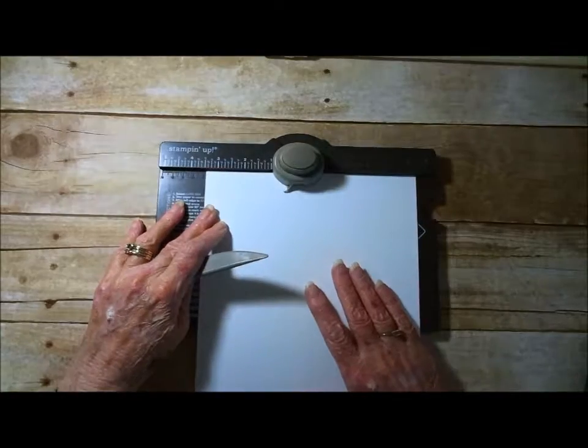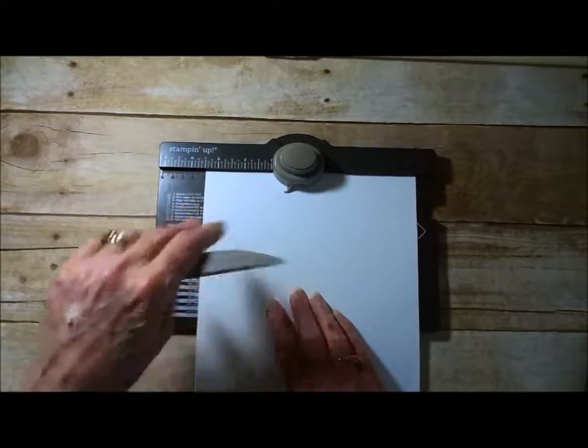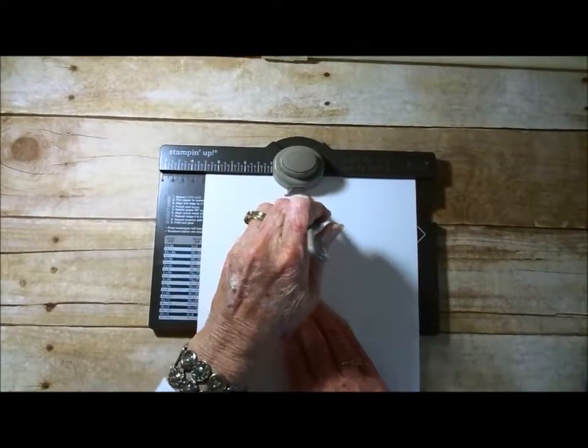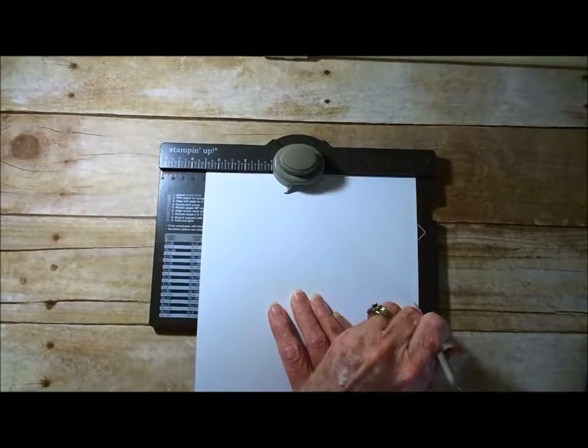So you're going to put it in, line it up at 3 and a half, punch, and score coming from here all the way down.